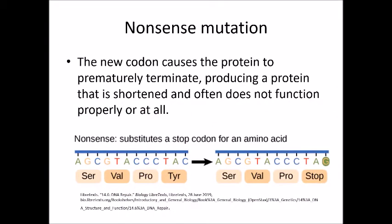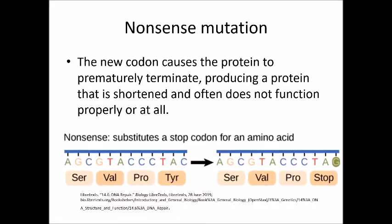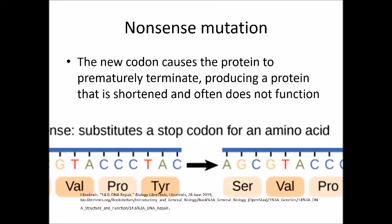Nonsense mutations: the new codon causes the protein to prematurely terminate, producing a protein that is shortened and often does not function properly at all. This happens, for example, in cystic fibrosis.